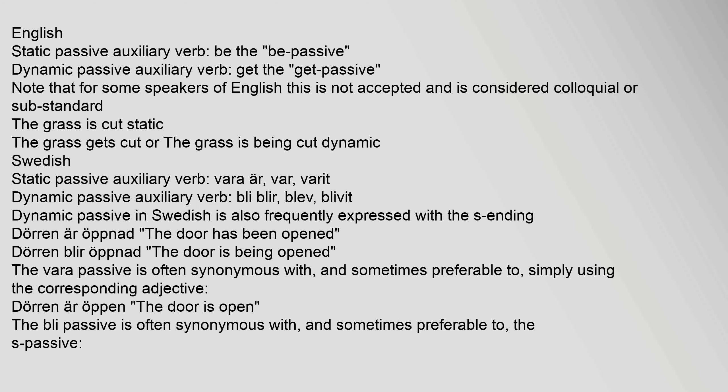In English, the static passive uses auxiliary verb "be" (the "be" passive), while the dynamic passive uses "get" (the "get" passive) — though for some speakers this is not fully accepted and is considered colloquial or substandard. Examples: "The grass is cut" (static) versus "The grass gets cut" or "The grass is being cut" (dynamic).